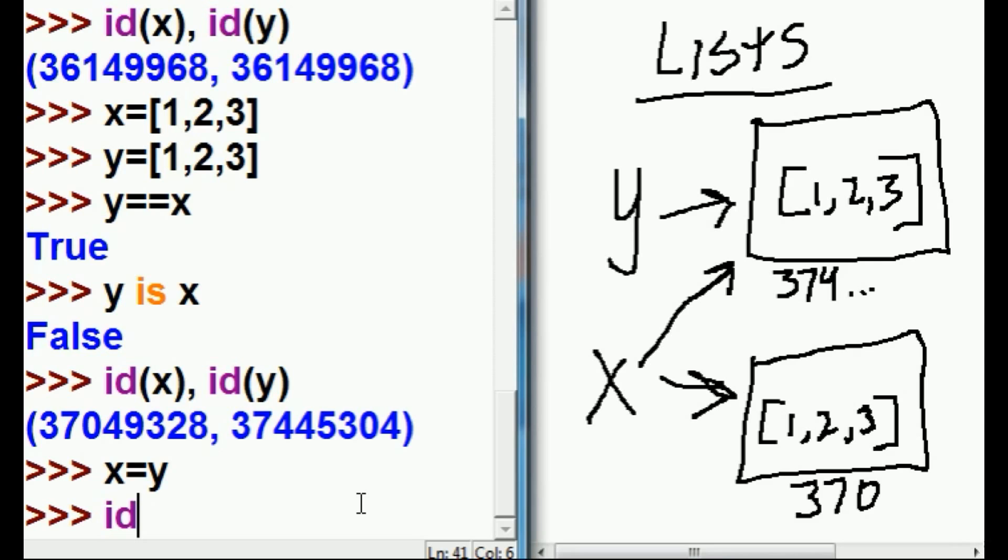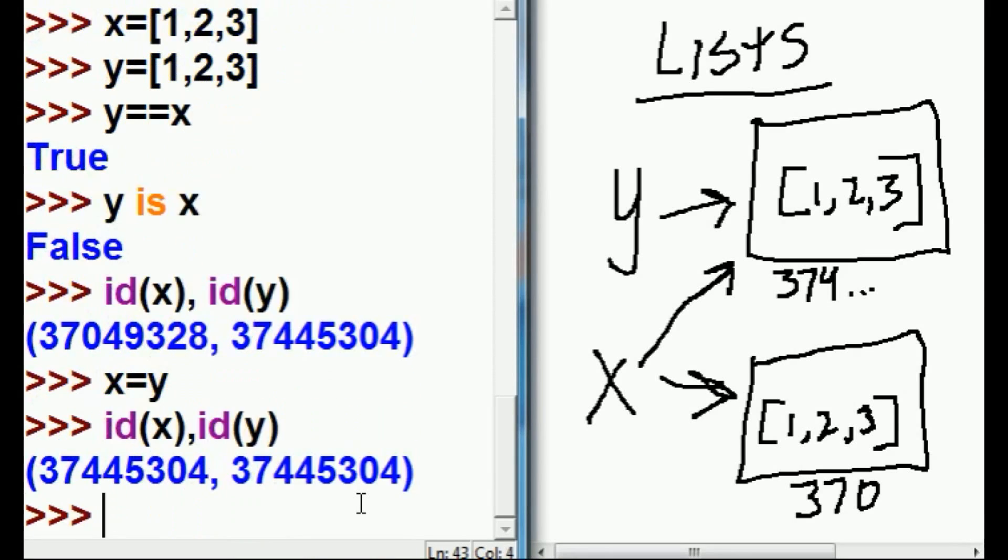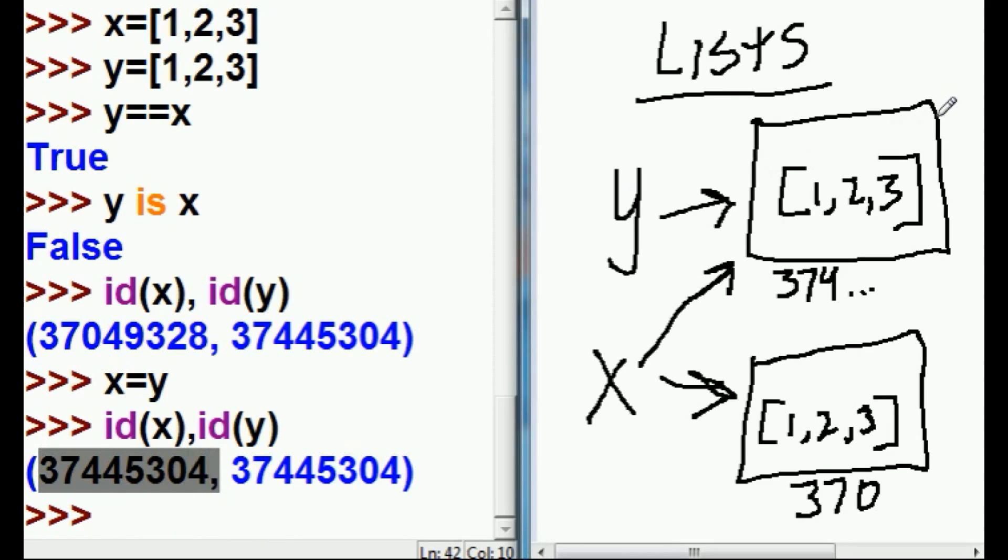Let's see if this is true. I'm going to key in id of x and id of y. I'm going to get 37445304 for both of them. Let's see if that's what happens. Yes, that's exactly what happens. Both of these guys are now pointing to this address. Here and here. x and y both now point to this guy right here. That's what they're pointing to.